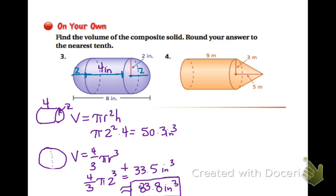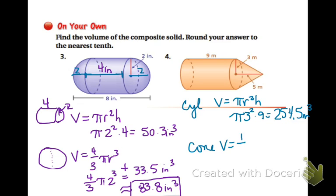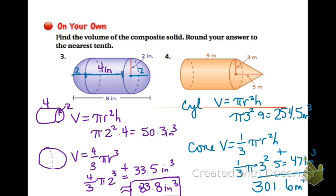In part 4 over here, we have a cone and a cylinder. So for the cylinder, we will have the volume equal to π r squared h. So π, and then it shares the radius. So 3 squared times 9, and that's going to be 254.5. And our unit is meters cubed. And then our cone is 1/3 of π r squared h, but it has a different height because we have to do the height of the cone. So 1/3 π has the same radius, 3 squared, and then times 5. And that is going to be equal to 47.1 meters cubed. So if you add those together for the composite, you get 301.6 meters cubed.